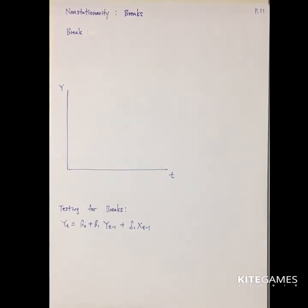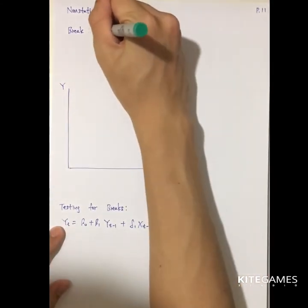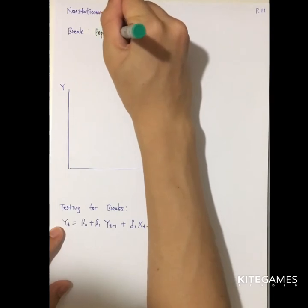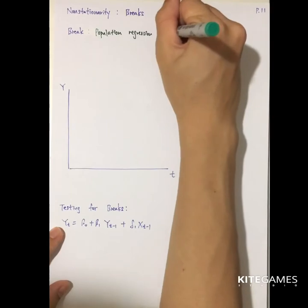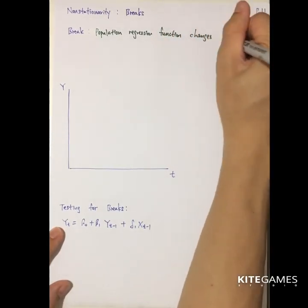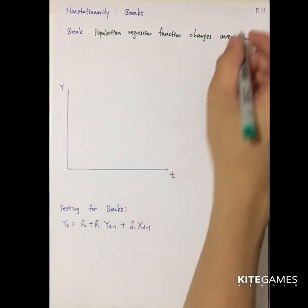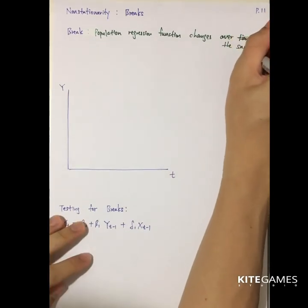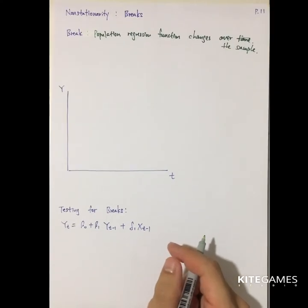Another type of non-stationarity comes from the fact that there may be some breaks in the samples. By definition, breaks means that the population regression function changes over time — that is, there is a change in the pattern of the population regression functions.